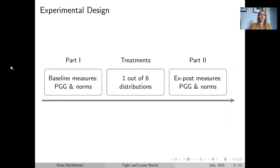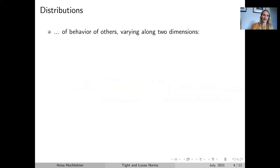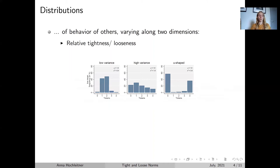In the first and last part of the experiment, we're looking at behaviour and norms in the public goods game. In the middle, we have treatment manipulations in which we show participants one out of six possible distributions. Participants also know that for the last part of the experiment, the player they're matched with in the public goods game is drawn from the distribution they have been shown. These distributions vary along two dimensions — the first one is the relative tightness or looseness. As you can see in the picture to the left, behaviour is quite concentrated and almost everyone is contributing one or two tokens.